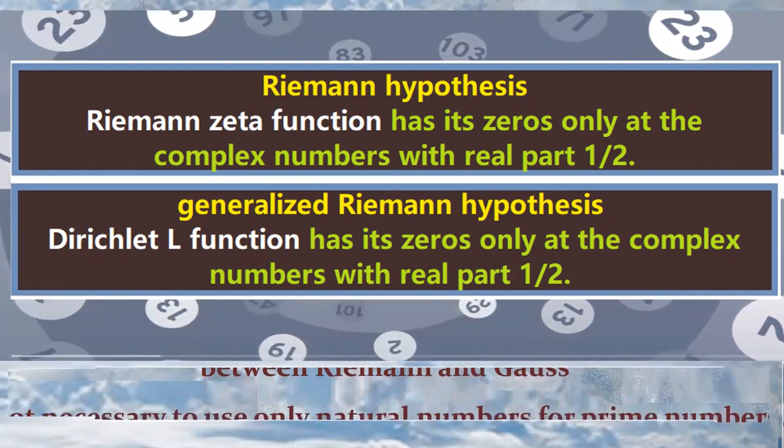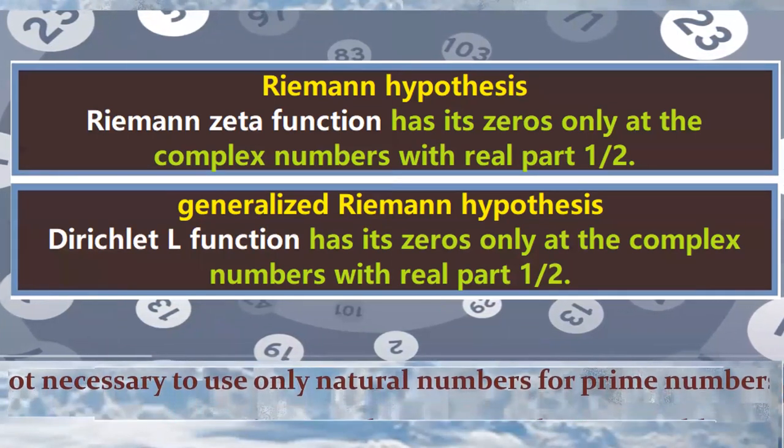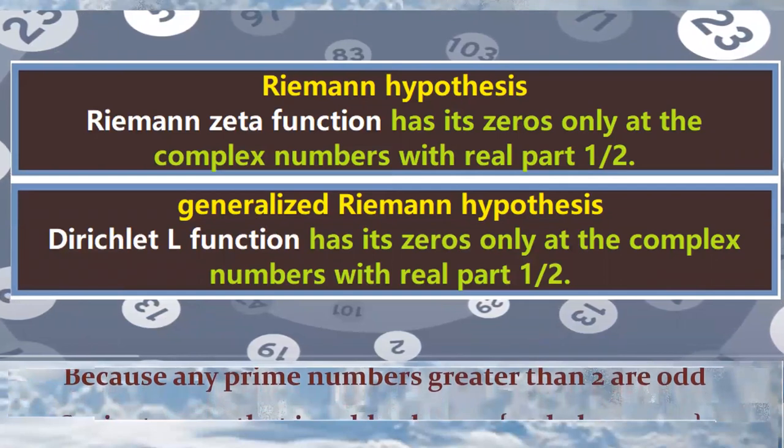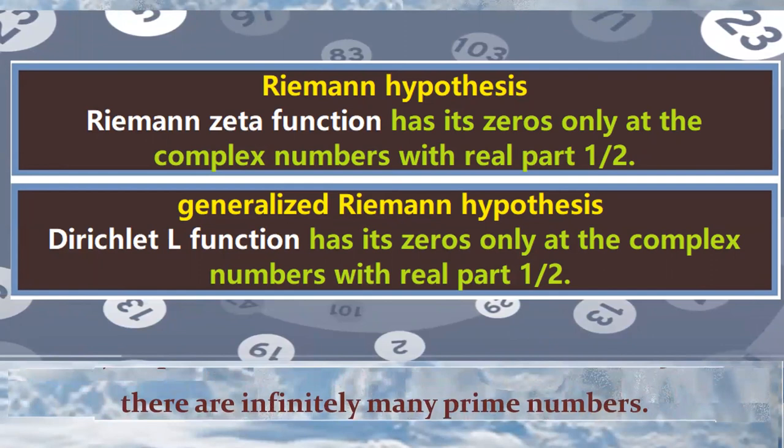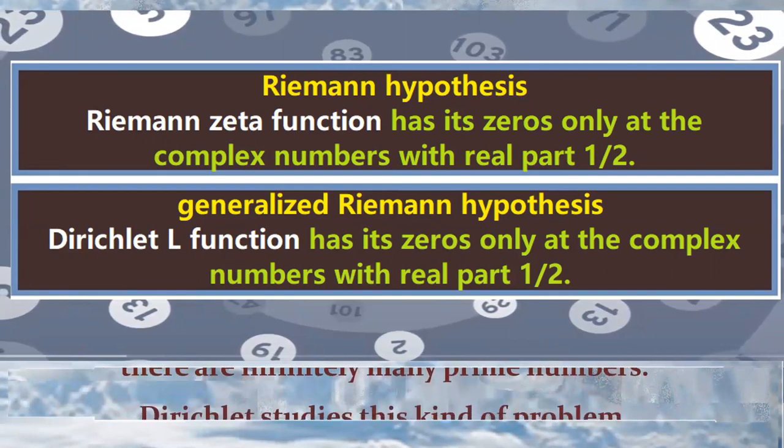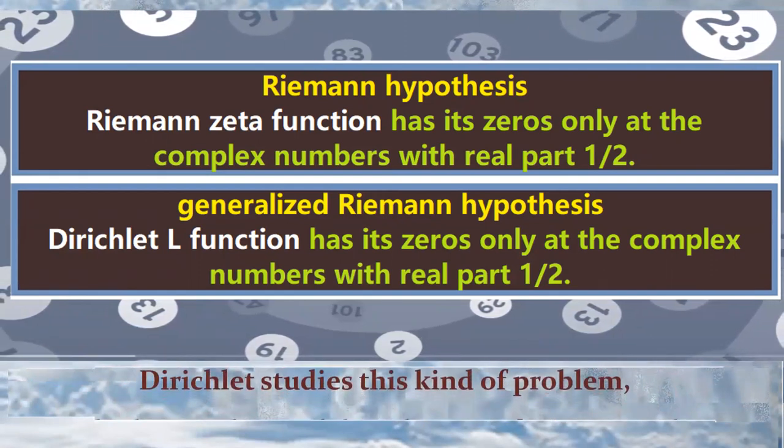Not necessary to use only natural numbers to pick out prime numbers. Because any prime numbers greater than 2 are odd. So, just prove that in odd columns 1 plus 2k, k equals 1, 2, 3, there are infinitely many prime numbers.